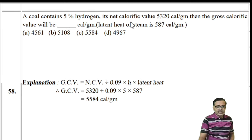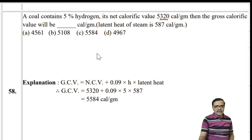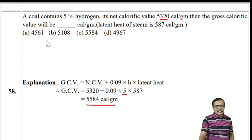Numerical: A coal contains 5% hydrogen and NCV = 5320 kcal/kg. GCV = NCV + 0.09 × H × 587 = 5320 + 0.09 × 5 × 587. Calculate to get GCV. The answer is option C.